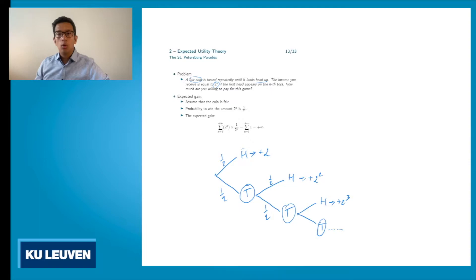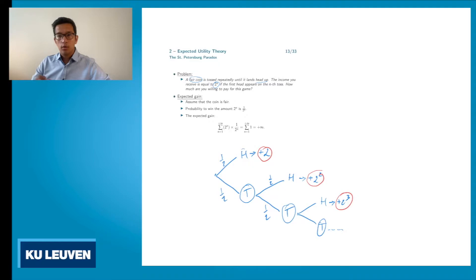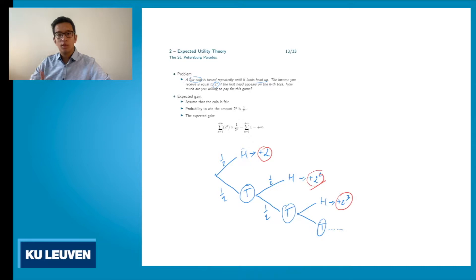You will always earn something positive. The minimum amount you will earn is $2. You can earn $4, $8, and so on. So if you pay a price for this game, say $10, it can happen that you end up with a loss. For example, if you get head up the second time you get $4 but you paid $10, that's a loss of $6. But the casino will earn money because you paid $10 and the casino only has to pay you $4, so the casino has a positive income.